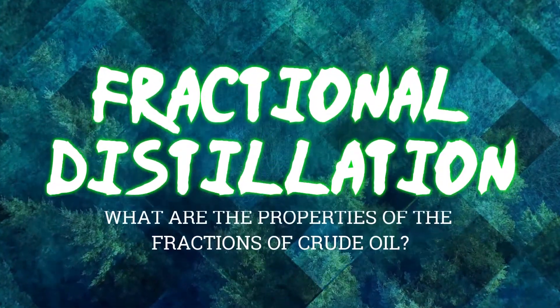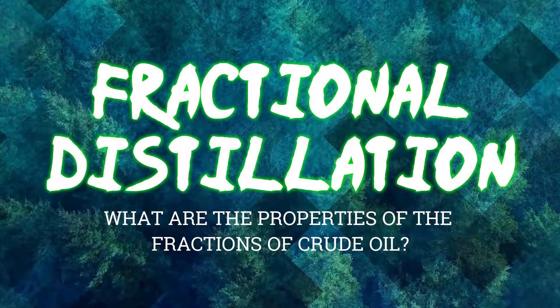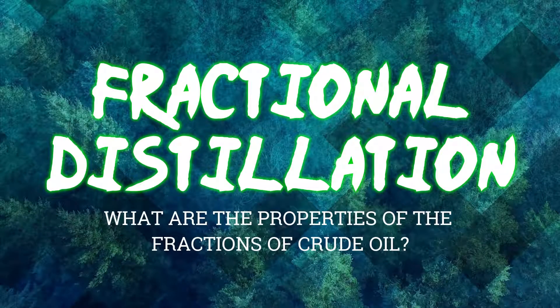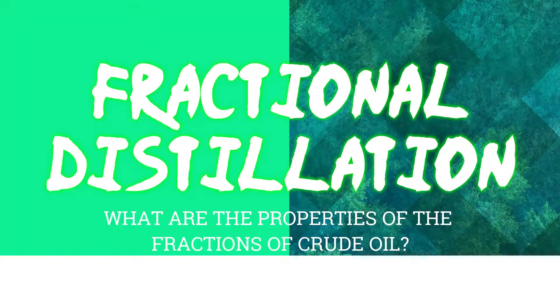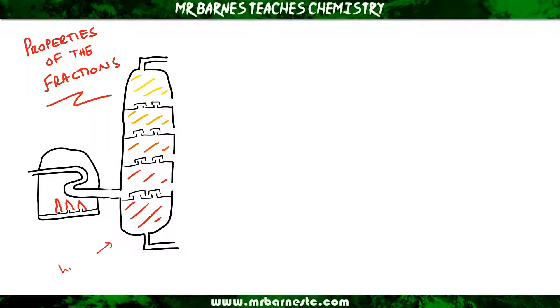Hi guys, welcome to this video looking at what happens to the properties of the fractions of crude oil as we go from the top to the bottom of the fractionating column. You should know that the temperature at the bottom of the fractionating column is high and at the top of the column it's low.